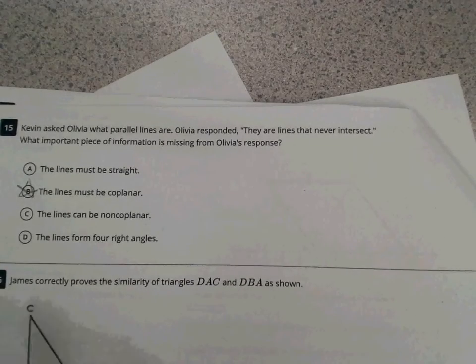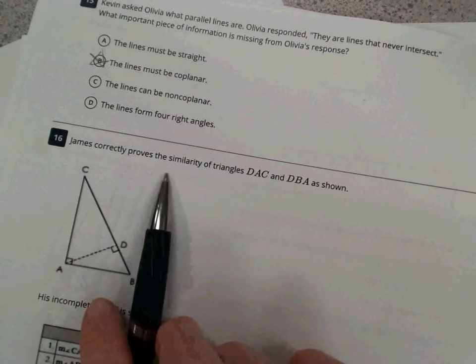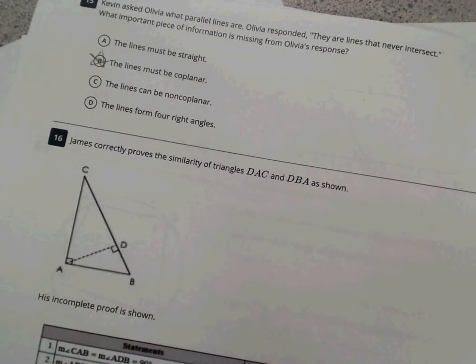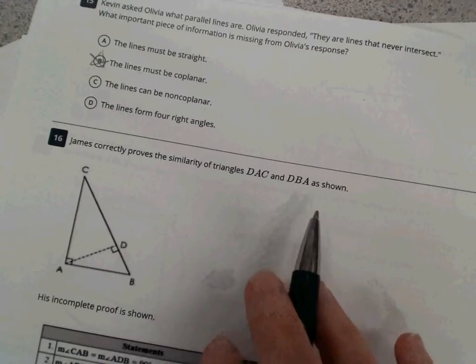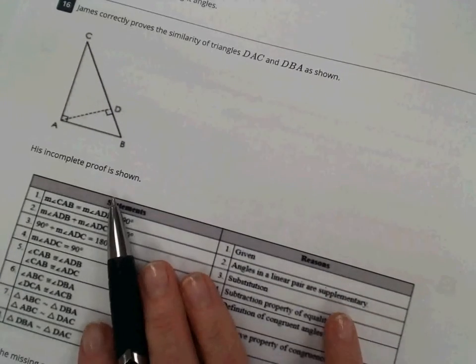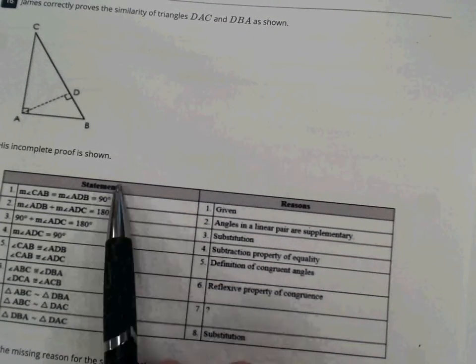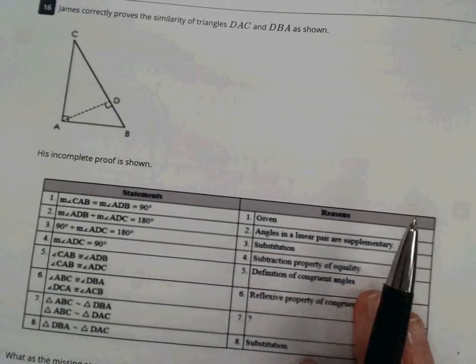Question 16 asks us, James correctly proves the similarity of triangles DAC and DBA as shown. His incomplete proof is shown.